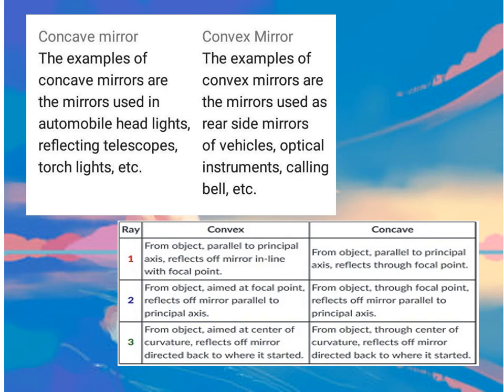In convex mirrors, examples are mirrors used as rear-side mirrors of vehicles, optical instruments, calling bells, and so on.